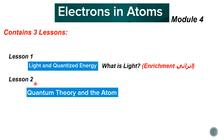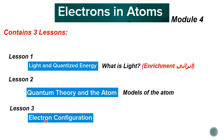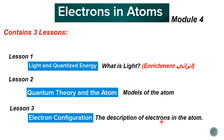The second lesson talks about quantum theory and the atom — models of the atom. The final lesson is electron configuration, which describes the electrons in the atom: where exactly are the electrons, and how can we describe them? That's the structure of our first module, insha'Allah. In the next video we are going to start with lesson two, and I will incorporate some of the main information from lesson one into lesson two since the concepts are connected.